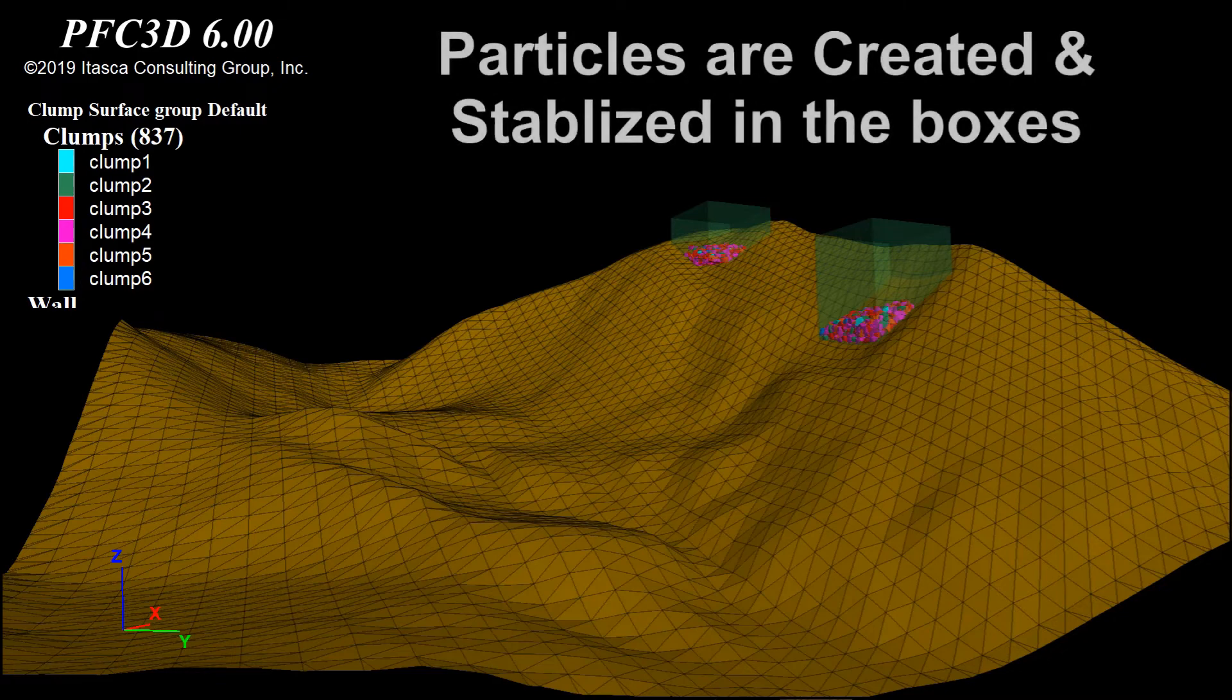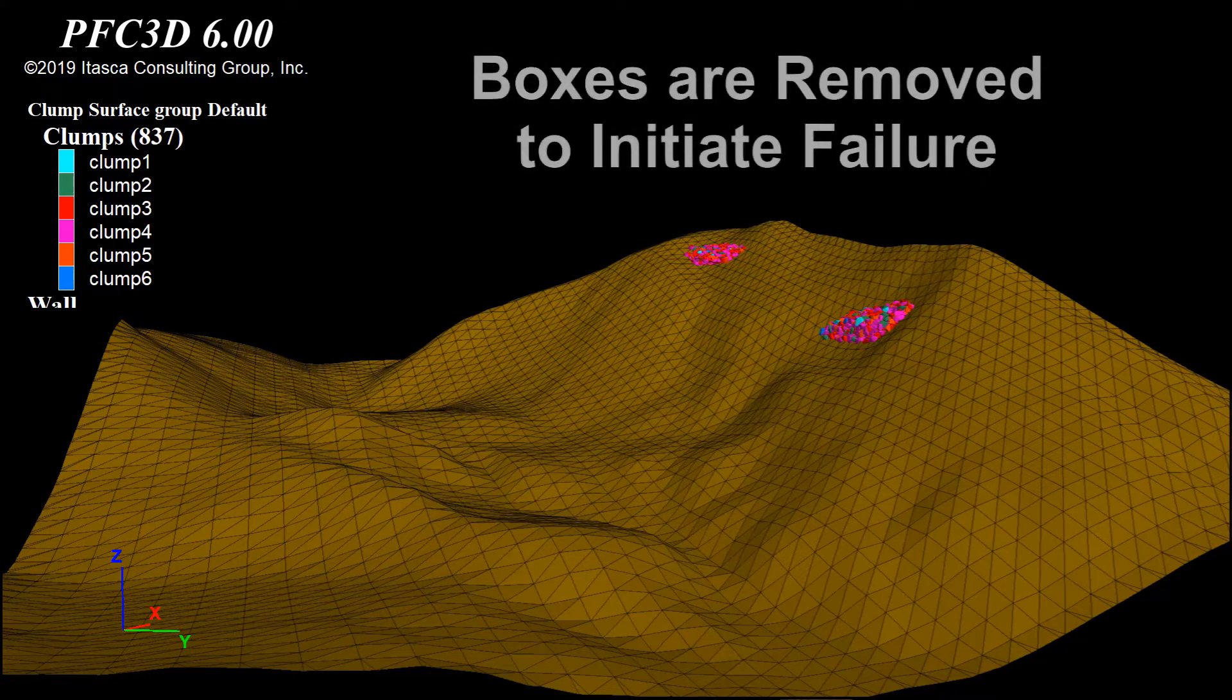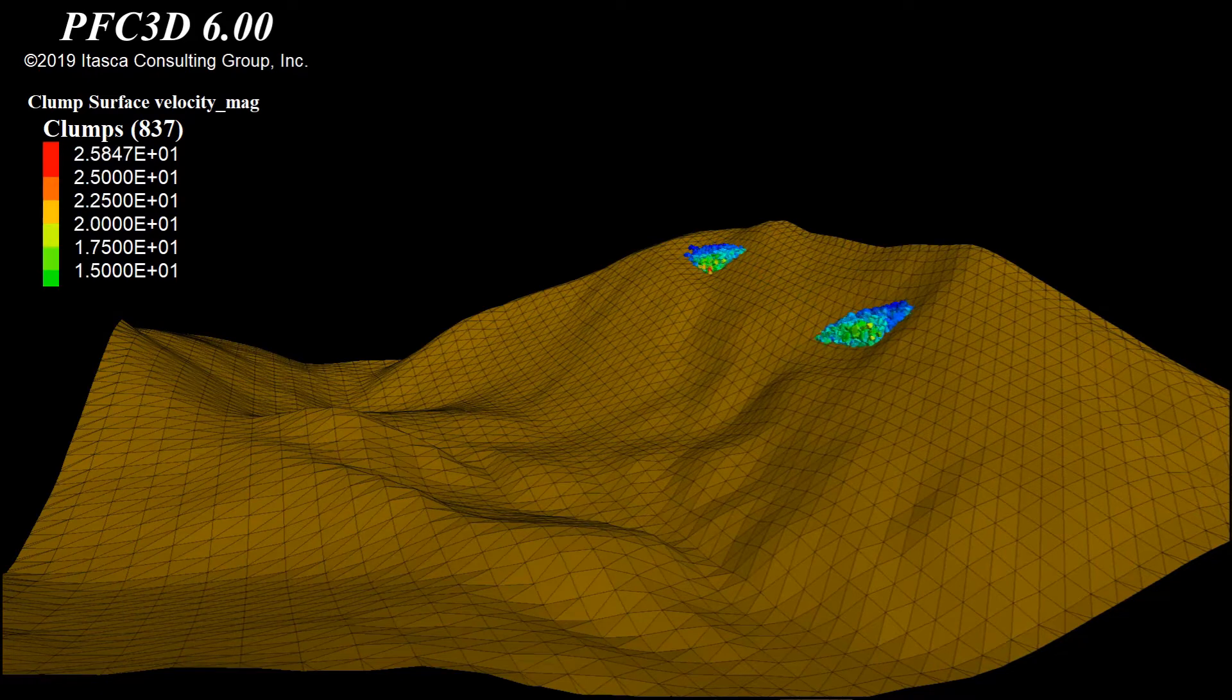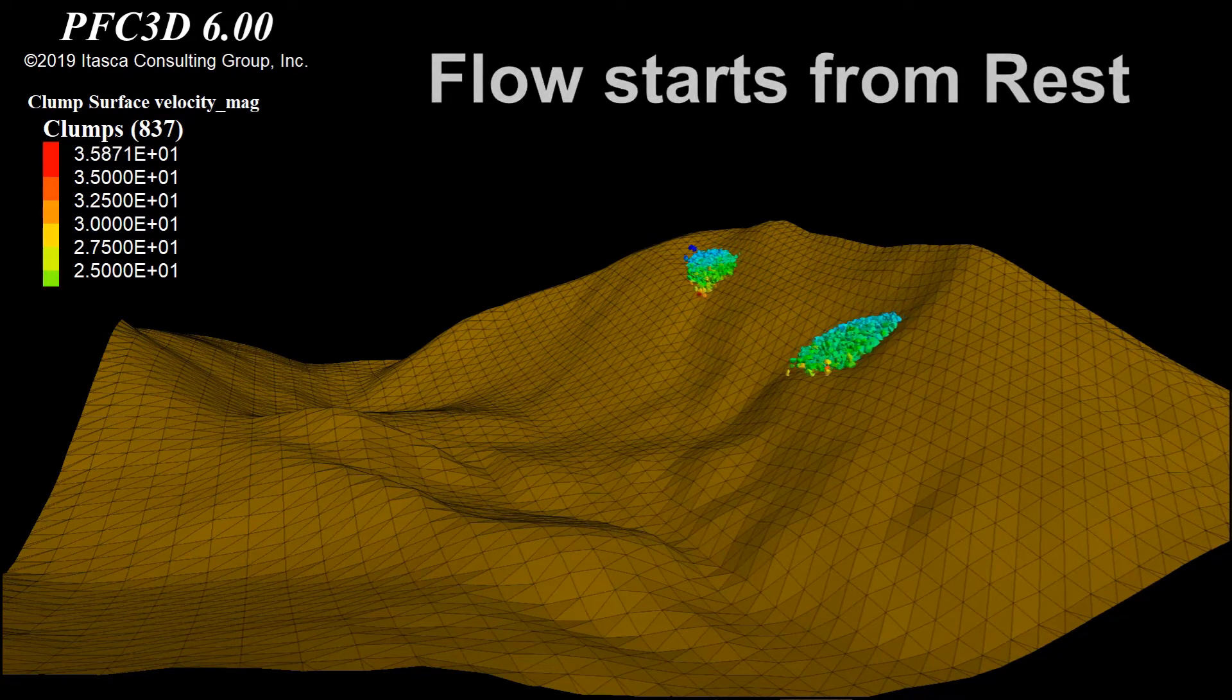In the very beginning, the slope material is generated and stabilized inside a cubic box. The failure starts once the box walls get deleted and all the particles start moving downslope from their initial position, gaining velocity and high energy.